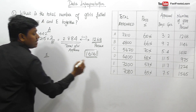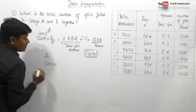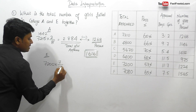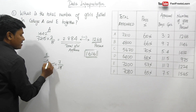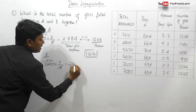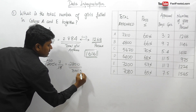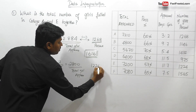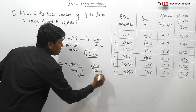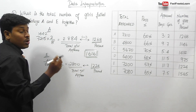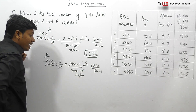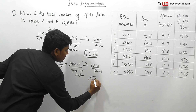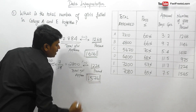Now let me move on to college E. The total students are 7200. Boys and girls are in ratio 11:7, so girls are 7 parts out of 18 total. Girls appeared = (7/18) × 7200 = 2800. In college E, total girls passed is 1224. So girls failed in college E = 2800 minus 1224 = 1576.